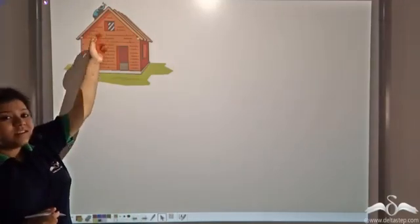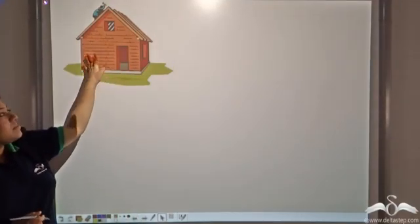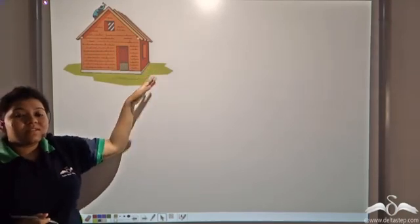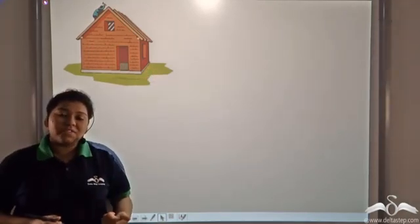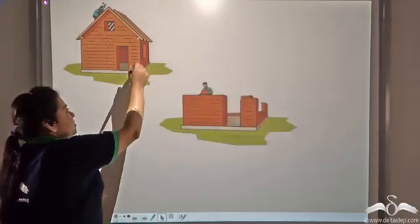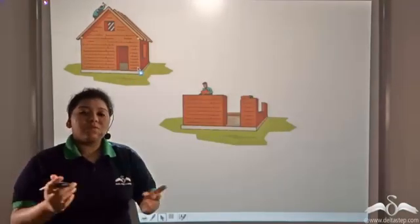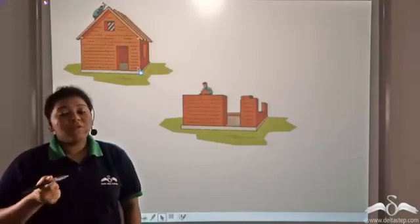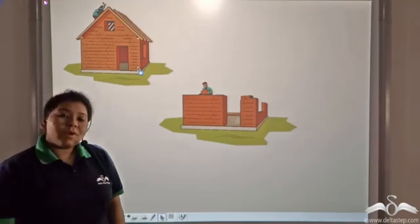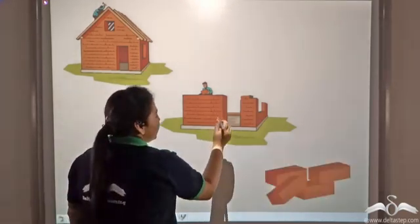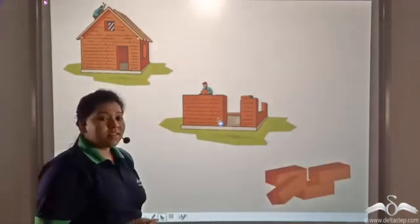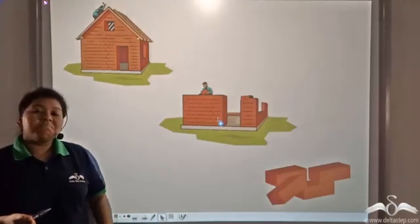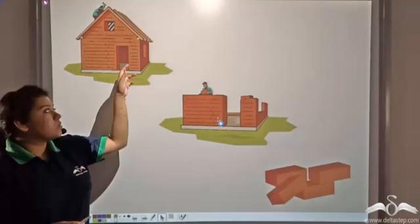This worker is building this beautiful house. So what is a house made up of? A house is made up of several walls and what is a wall made up of? A wall is made up of individual bricks. So bricks are the building blocks of the house.